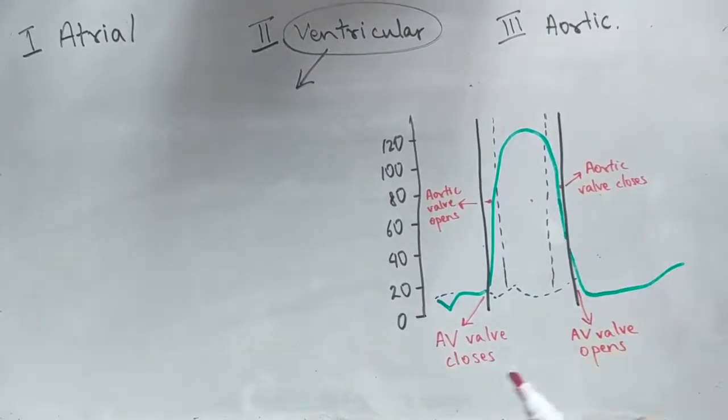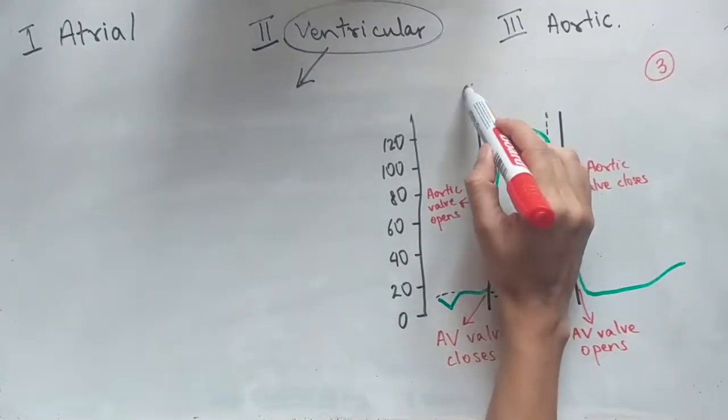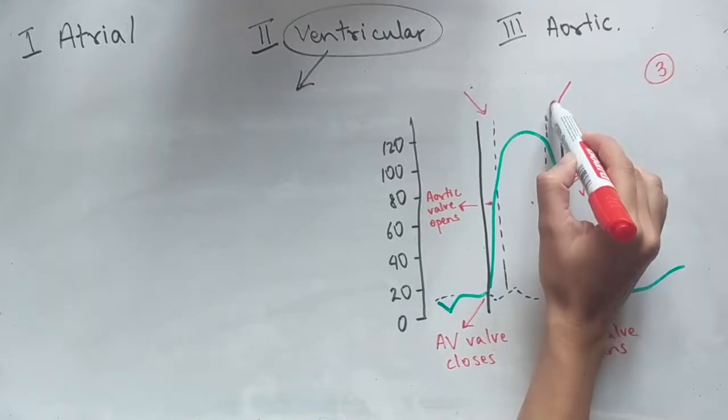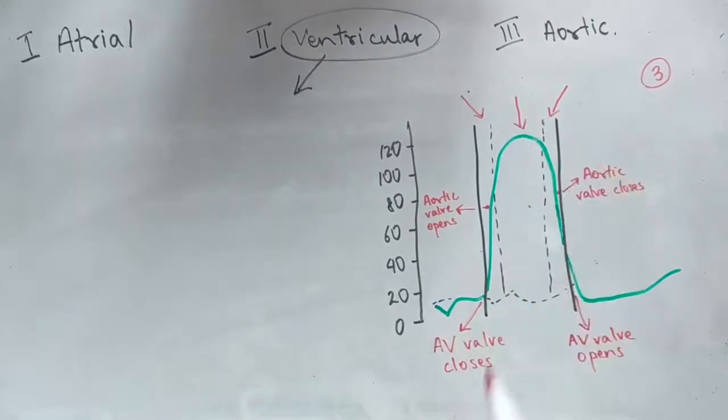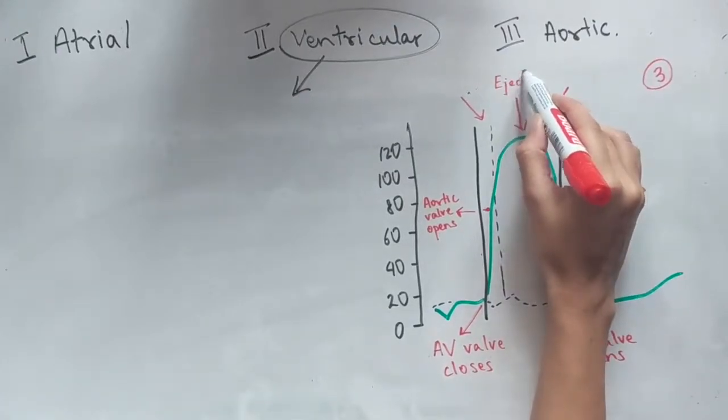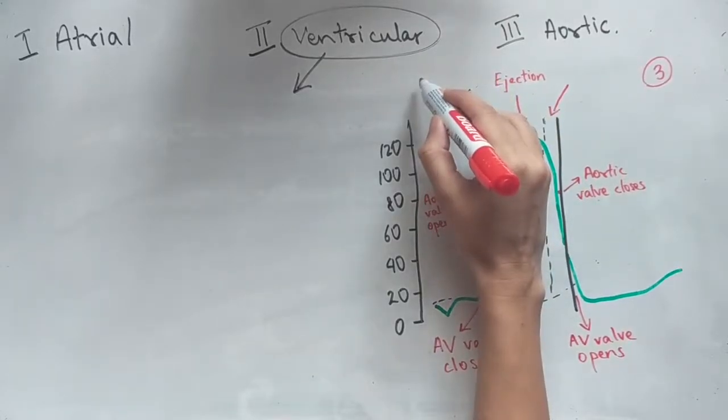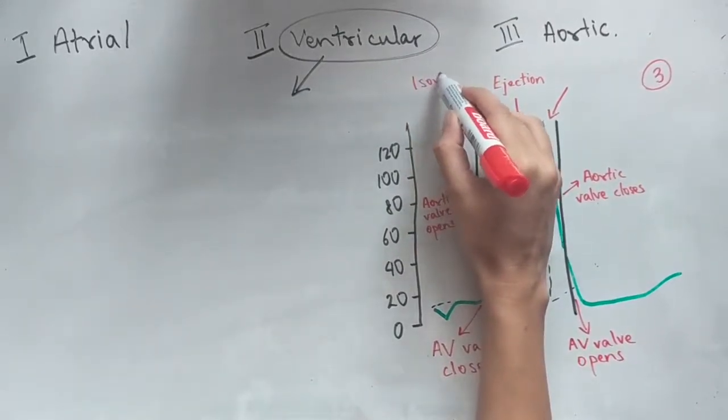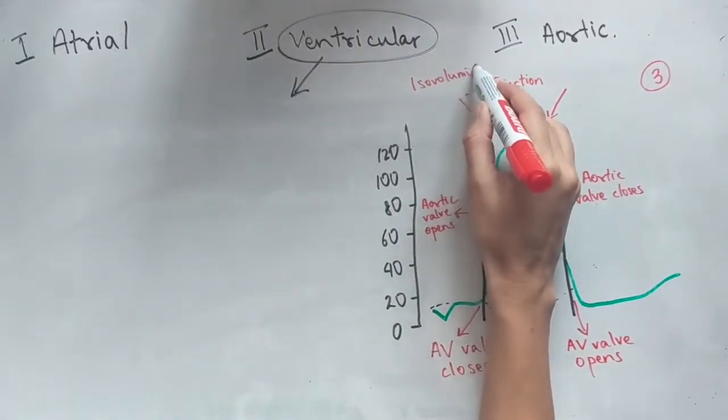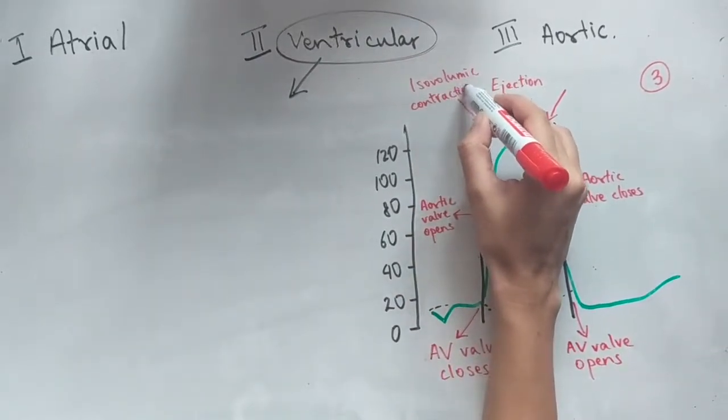So you need to remember three phases from the last video, the cardiac cycle. You've got the ejection phase where you've got the rapid and the reduced phases. Then you have the isovolumic contraction and isovolumic relaxation and this is what the ventricular pressure curve should look like.